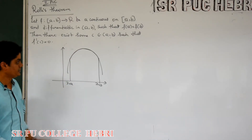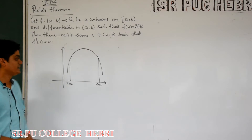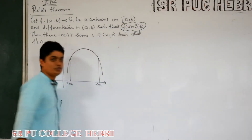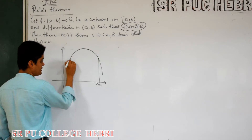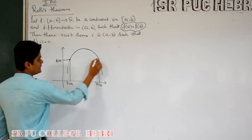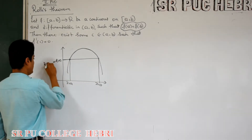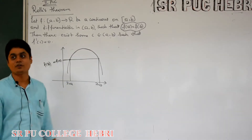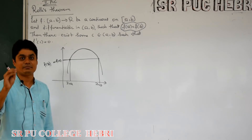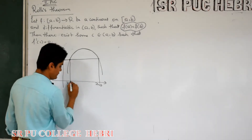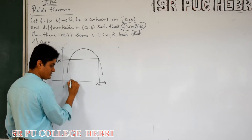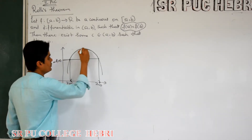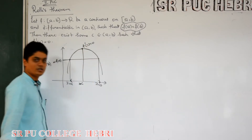So it is continuous — no sudden changes. And it is differentiable — it is a smooth curve. The important condition for Rolle's theorem: f(a) must be equal to f(b). When all three conditions are satisfied — continuous, differentiable, and f(a) = f(b) — then the statement says there exists at least one c in the open interval (a, b) such that f'(c) = 0.